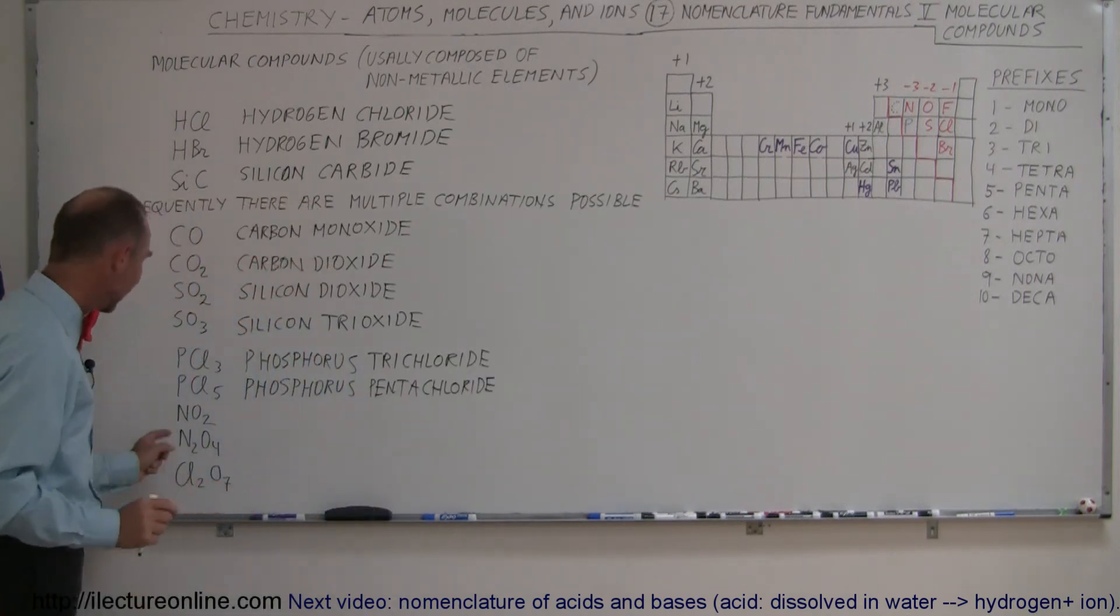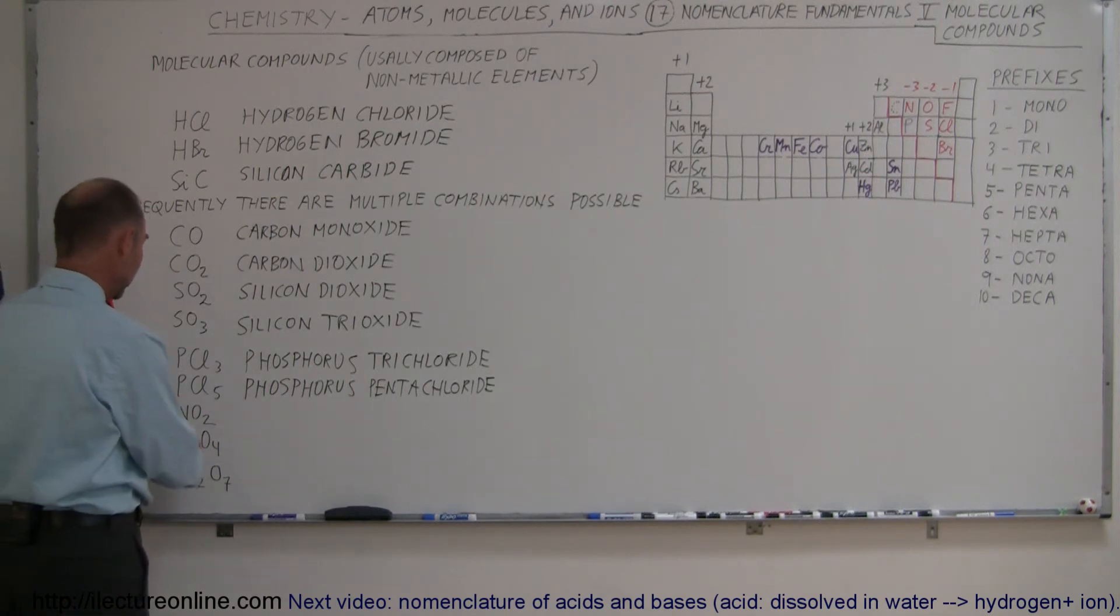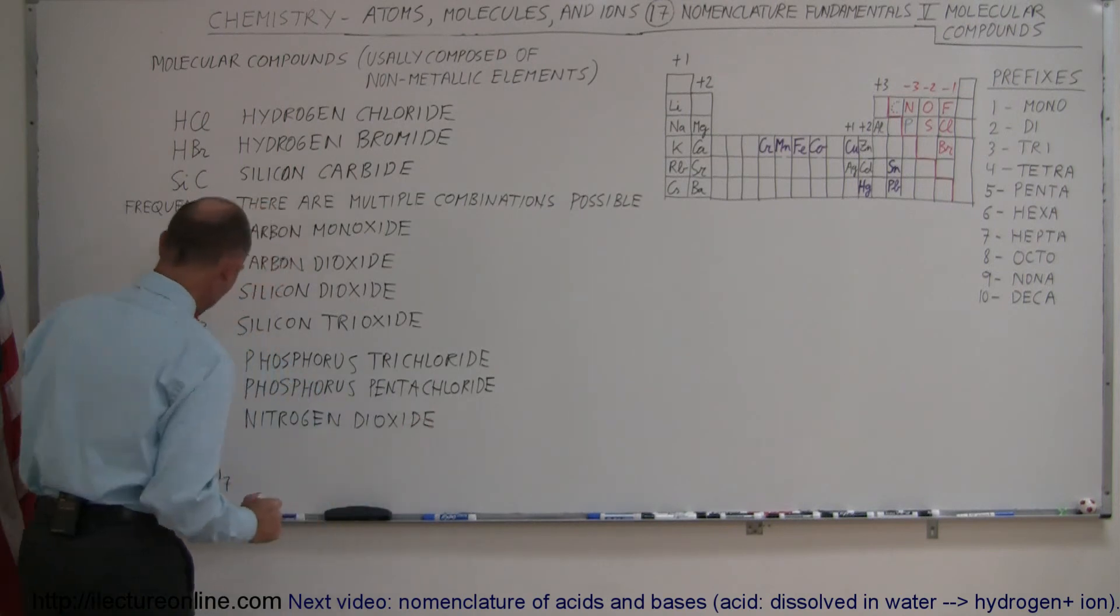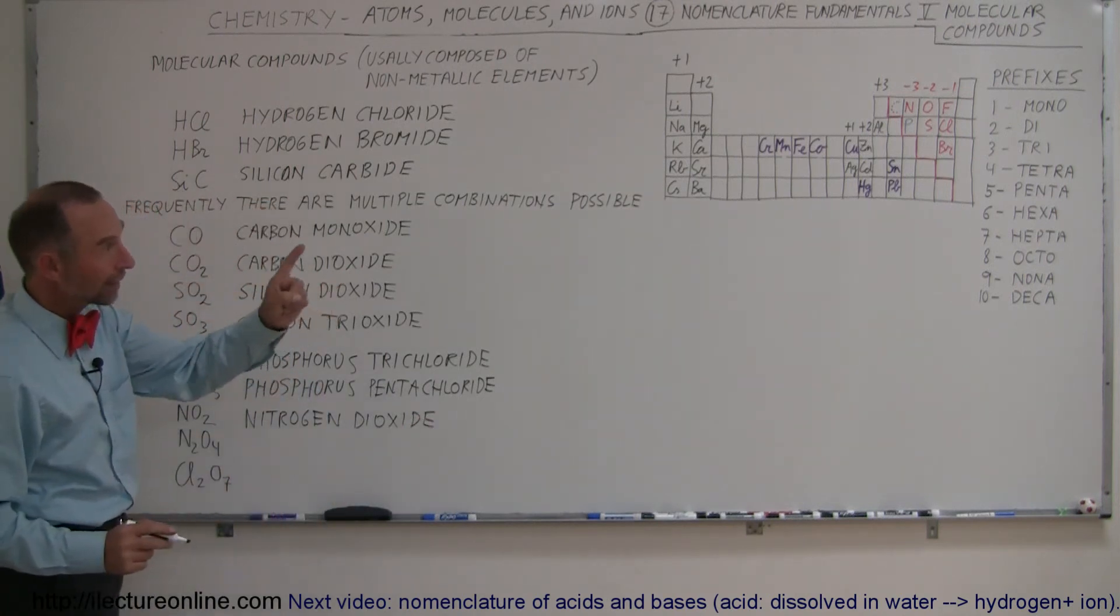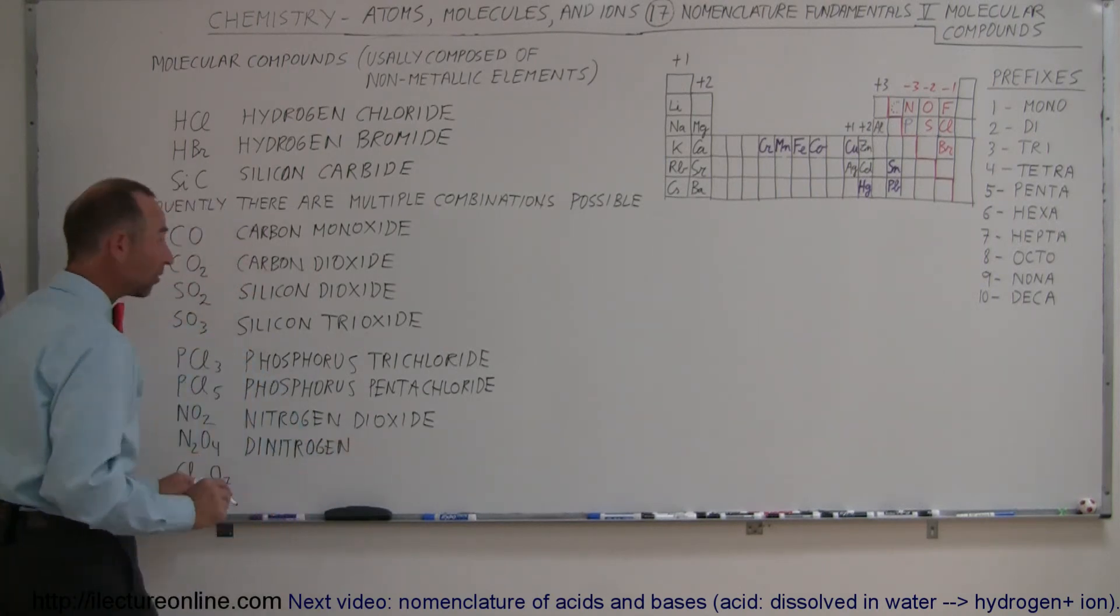Now we have nitrogen with two oxygens and two nitrogens with four oxygens. You say, well it's not the same thing, but one is double the other—well in a way yes, but it's a different kind of molecule. This is called nitrogen dioxide. Here we have two nitrogen, so we're going to call that dinitrogen. Since we have four oxygens, we're going to call that tetraoxide.